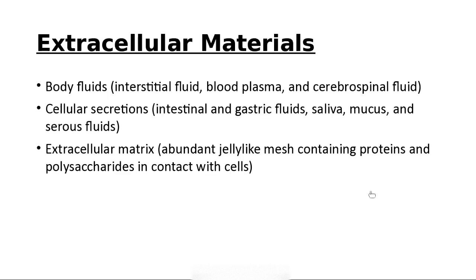We also have extracellular materials that make up part of our body: bodily fluids such as interstitial fluid, blood plasma, and cerebrospinal fluid; cellular secretions such as intestinal and gastric juice, saliva, mucus, and serous fluids; and the extracellular matrix, made of proteins, polysaccharides, and contact cells. There's a lot to you besides just cells.